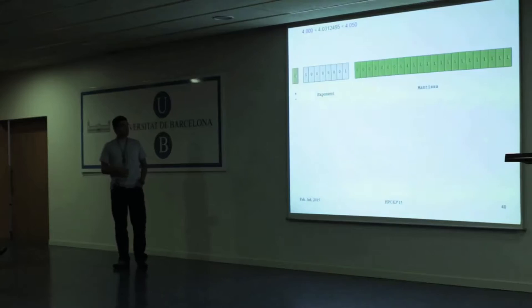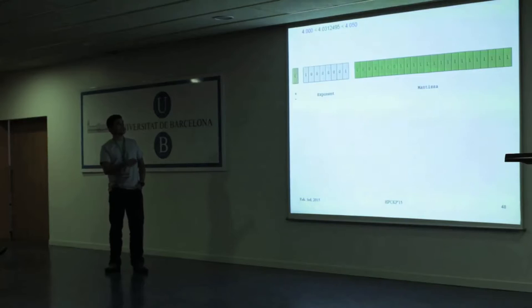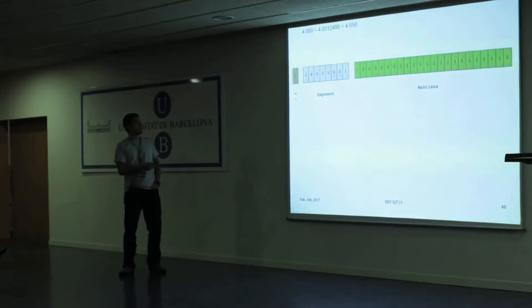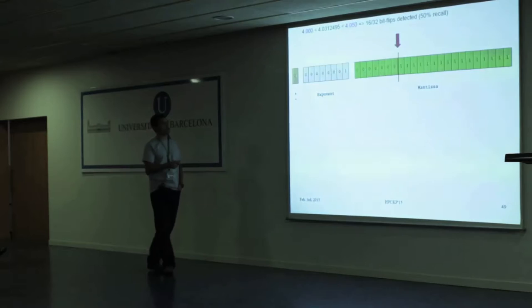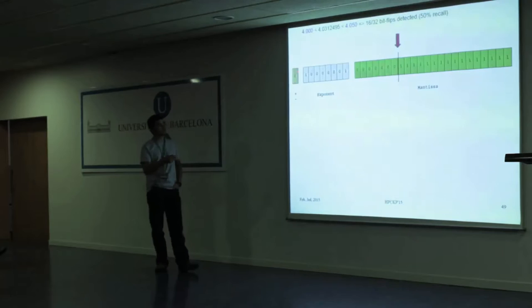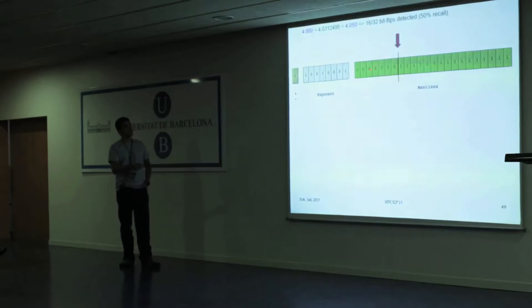We analyzed the format of the floating point representation. You have the sign, the exponent, and the mantissa. What I want to show is that when you have a corruption that touches the first 16 bits of this floating point representation, it will change the value so much that it will be out of the expected range.